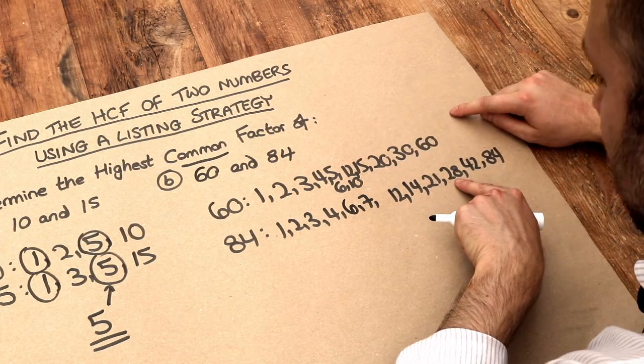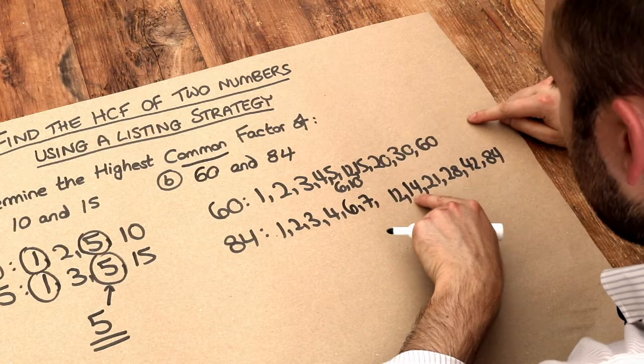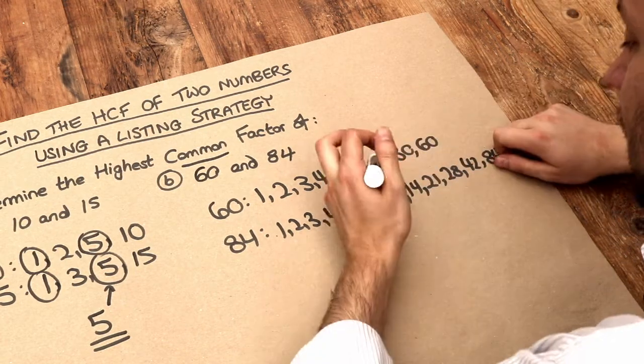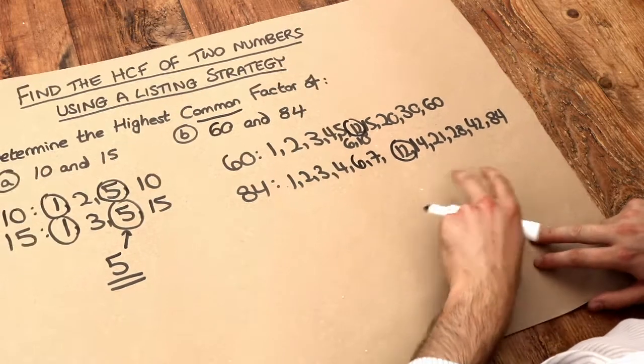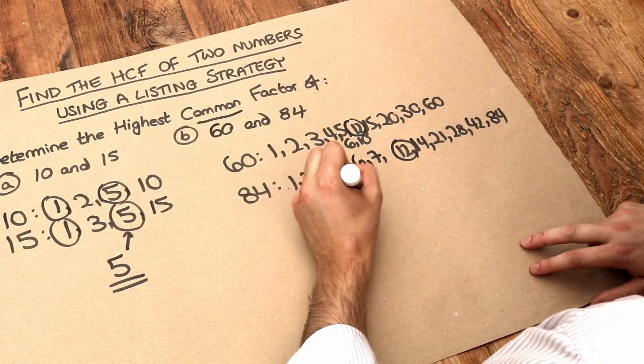28, no, is not in there. 21, no, is not in there. 14, no, that's not in there. 12, yes it is in there. We can see that 12 is in both lists. So therefore the highest common factor is 12.